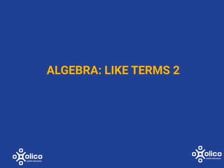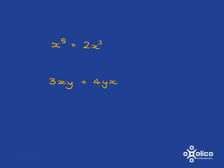We're going to do more work with like terms. If we look at x to the 5 plus 2x cubed, can we simplify? The answer is no, because even though the x's are the same, for things to be like terms they have to have the same variable and the same exponent, and the exponents aren't the same here.